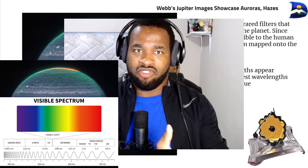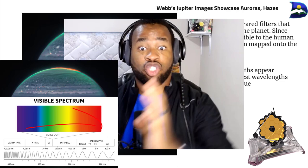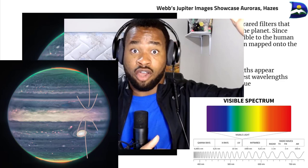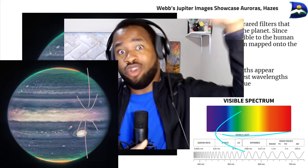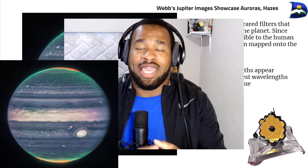There are three specialized infrared filters that showcase details of the planet. Since infrared light is invisible to human eyes, the light has been mapped onto the visible spectrum. The long wavelength appears red and the short wavelength shows more blue. As you move from top to the middle and bottom to the middle, you go from longer to shorter wavelength — lower to higher frequency, and lower to higher energy — applying our understanding of the electromagnetic spectrum.